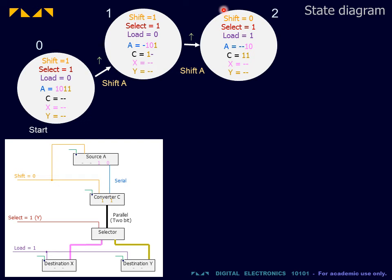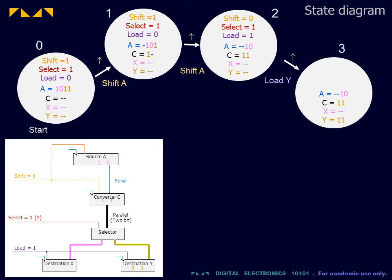It is now necessary to change the control inputs in order to disable the serial shift and enable the parallel load. At the next clock trigger, the contents of the data converter are loaded into the destination y.